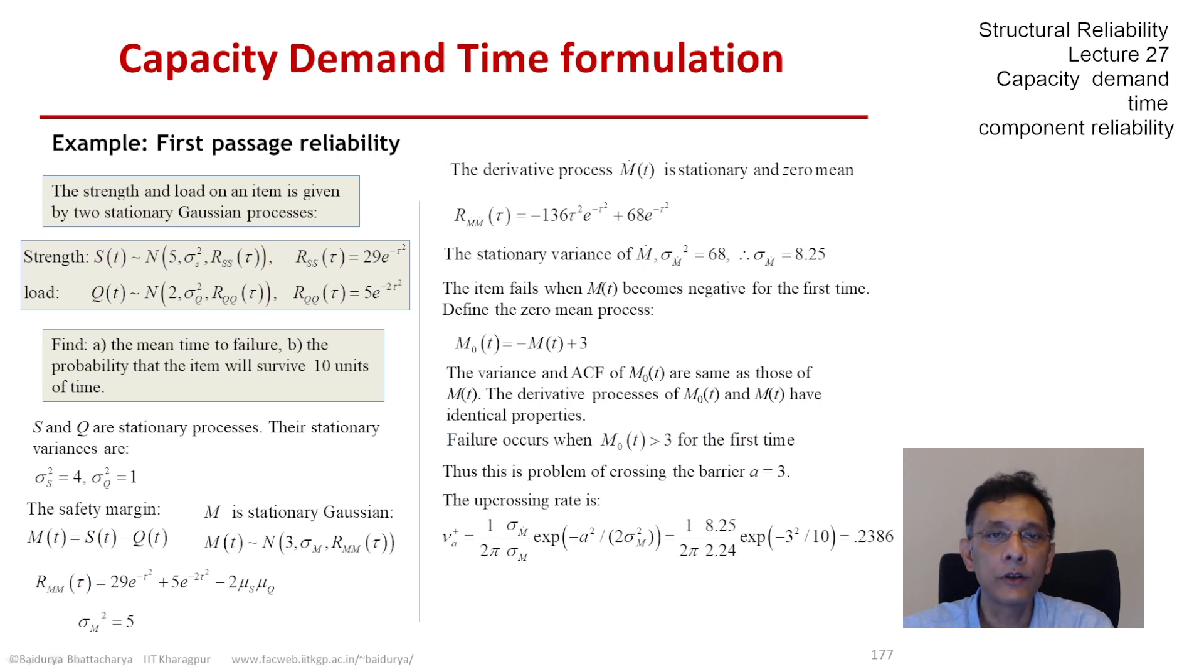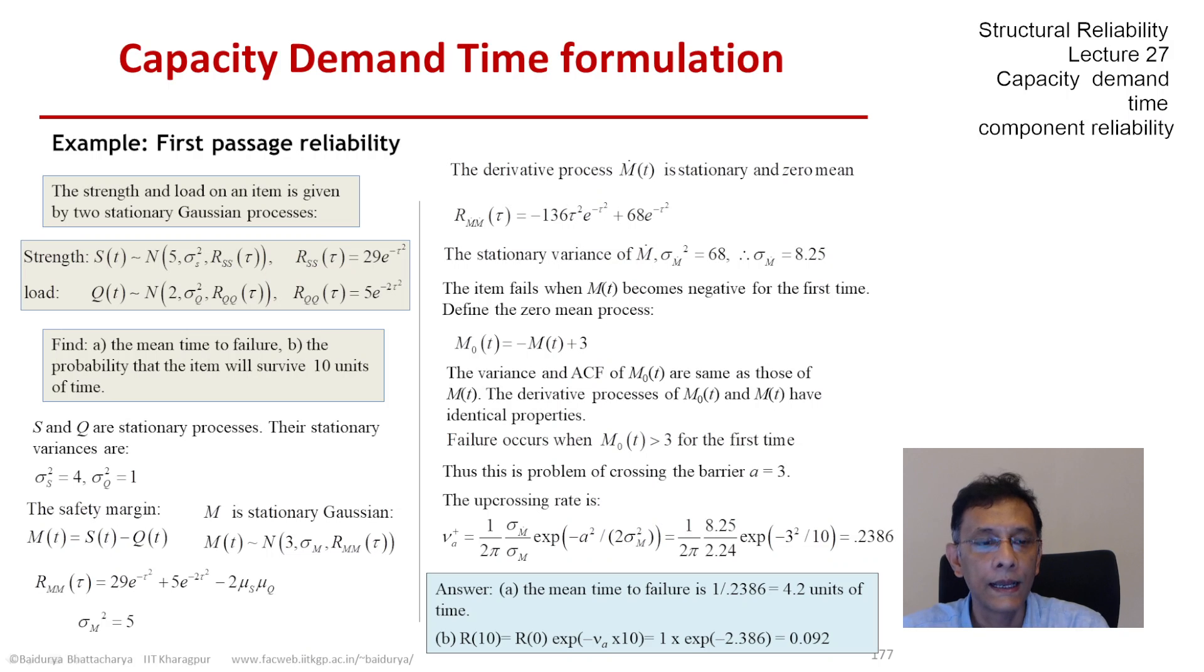The upcrossing rate is, as we have found, the expression for nu_a⁺. Putting in the values of a and sigma_M and sigma_M_dot, or equivalently sigma_M₀ and sigma_M₀_dot, they are the same. So it comes out to be 0.2386 per unit time. That is the rate of upcrossing.